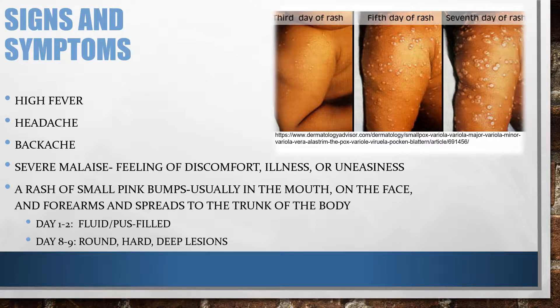After that, small red spots appear in the mouth and on the tongue. Around the time the sores in the mouth start breaking down, a rash appears on the skin, starting on the face. It then spreads to the arms and legs, and then to the hands and feet. Usually the rash spreads to all parts of the body within about 24 hours. As the rash appears, the fever usually does fall.